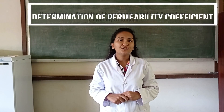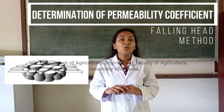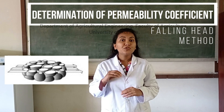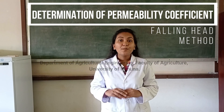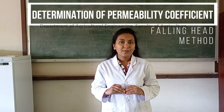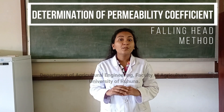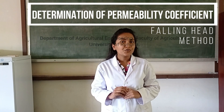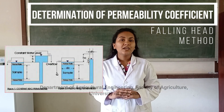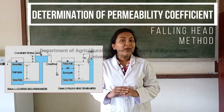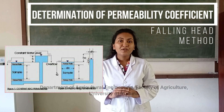Now let's move to the practical of determination of permeability coefficient using the falling head method. Permeability refers to the ability of soil to allow water to move through its void spaces. Generally, finer the texture, slower the permeability. Permeability coefficient is defined as the rate of flow under laminar flow conditions through a unit cross-sectional area of a porous medium under a unit hydraulic gradient. The two major methods of determining permeability are the falling head method and the constant head method. The falling head method is used for less permeable soils and the constant head method for more permeable soils.